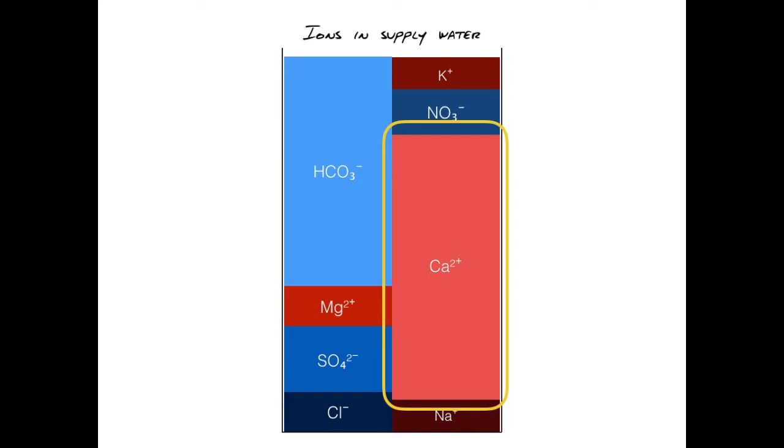Calcium and carbonate will produce lime scale, and the most common way to prevent this is a weak acid cation water softener.